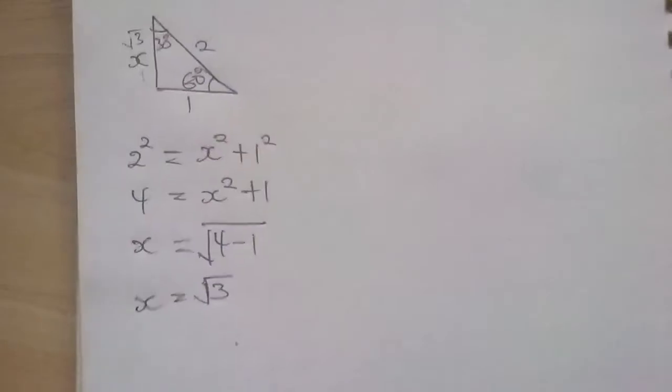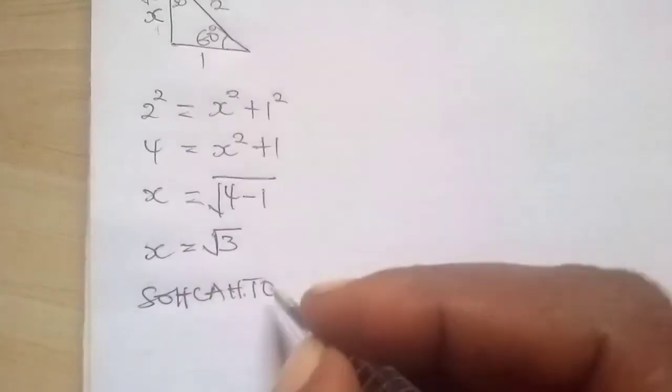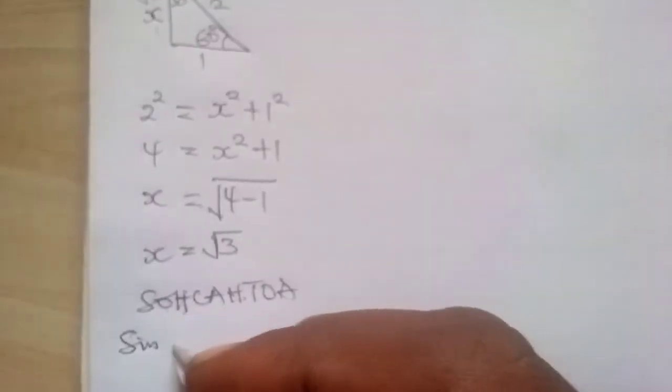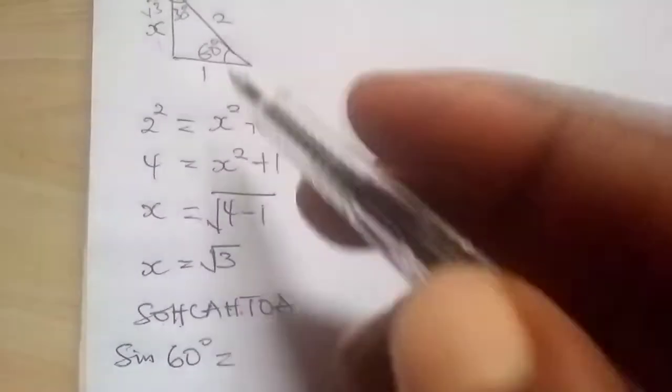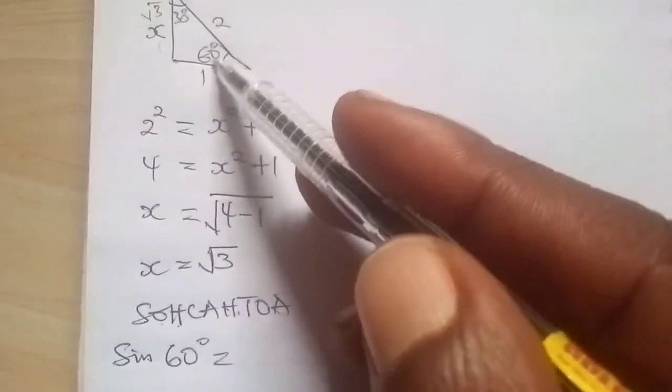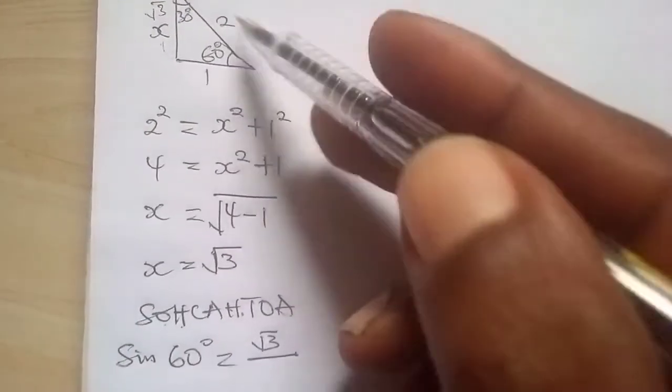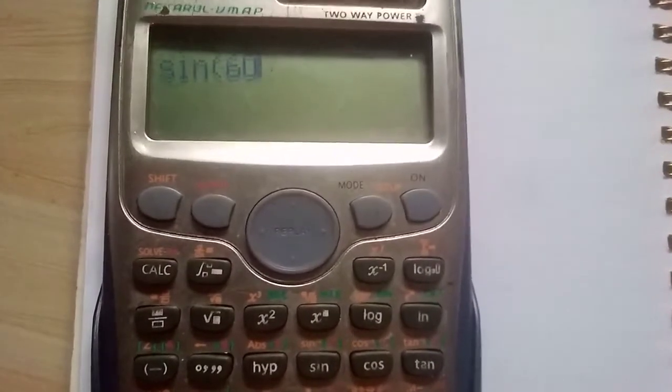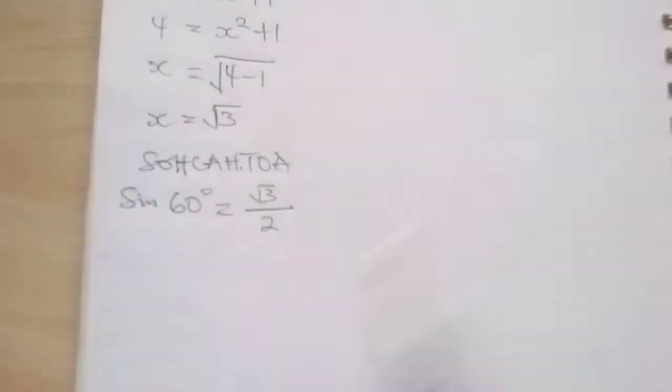If we say sine, it means opposite over hypotenuse. So if we look at sine 60 degrees, for example, sine 60 degrees, which means opposite of sine 60 is root 3 over hypotenuse 2. If you confirm it with a calculator, sine 60 is equal to root 3 over 2. So that's the proof there.